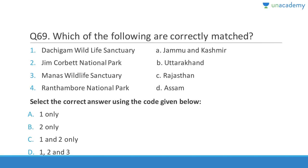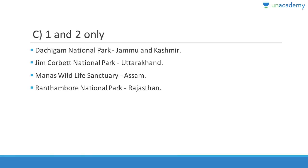Question sixty-nine: Dachigam Wildlife Sanctuary is in Jammu and Kashmir — correct. Jim Corbett National Park is in Uttarakhand — also correct. Manas Wildlife Sanctuary is in Assam — so the statement claiming otherwise is wrong. Ranthambore National Park is in Sawai Madhopur district, Rajasthan. Answer is C, one and two only. Ranthambore is very famous for tigers.